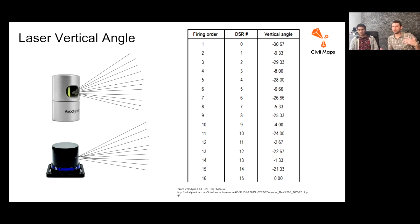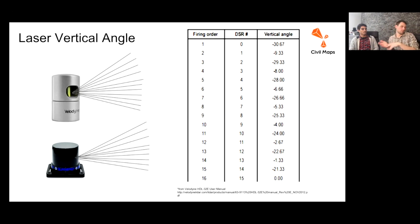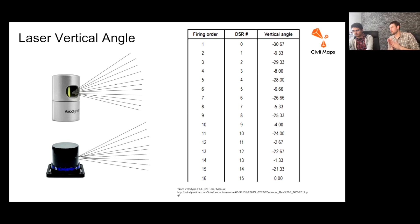Different lidars will have different numbers of lasers — 8, 16, 32, 64, or even fewer — and they will have these different vertical angles. It will be interesting to see how solid-state lidars deal with these angles as well.